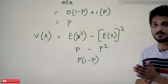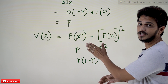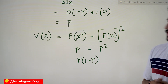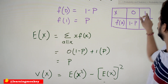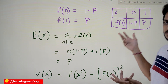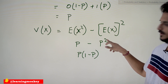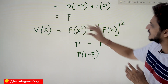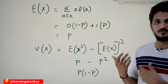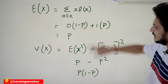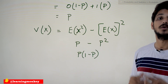To find the variance of the Bernoulli distribution, we use: Var(X) = E(X²) − [E(X)]². E(X²) = 0² × (1−P) + 1² × P = P. So Var(X) = P − P² = P(1−P). Therefore, the variance of the Bernoulli distribution is P multiplied by (1 minus P).